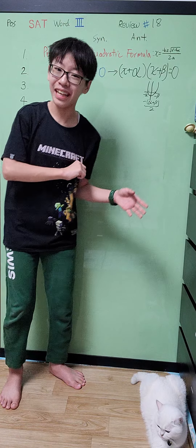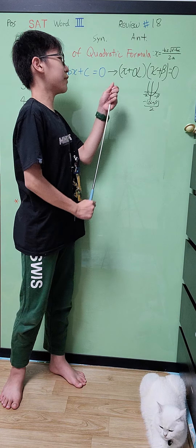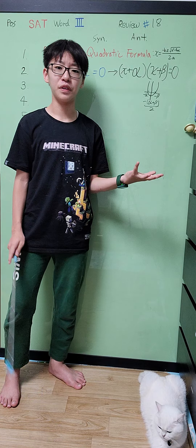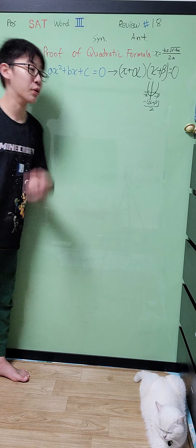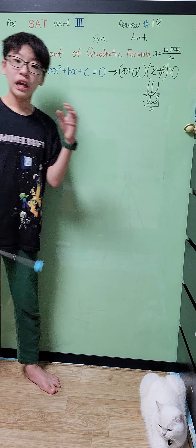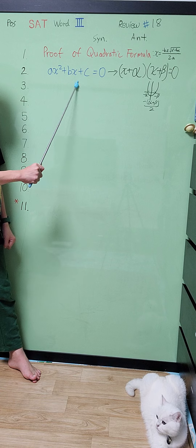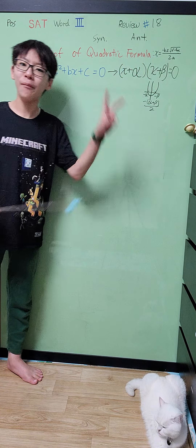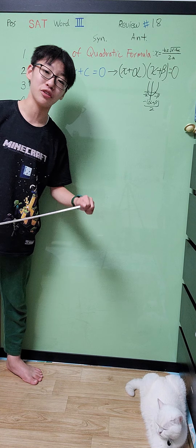Now when things get a little messy when we try to use the factorizing method, we'll just have to go ahead and use the second-best method. Once it's harder, it's also one of the easier ways too — trust me, there are harder ones. And we call that the quadratic formula.